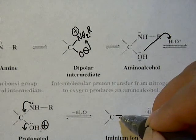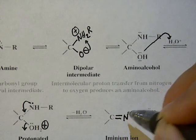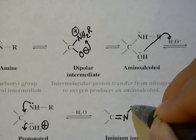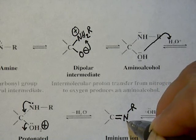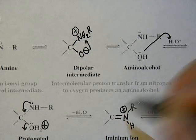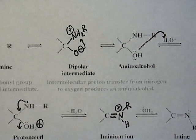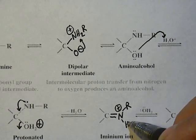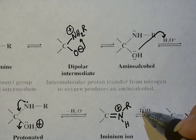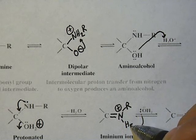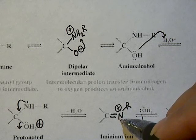At this point what you have is an iminium ion because it's got four bonds with a plus charge.